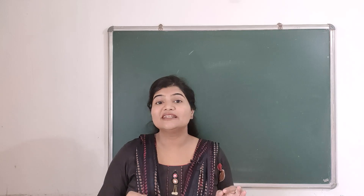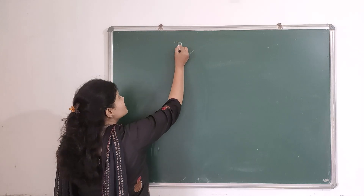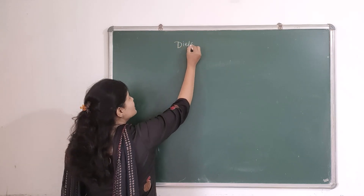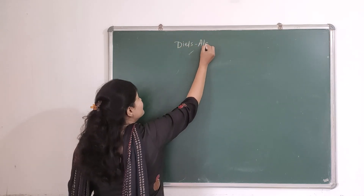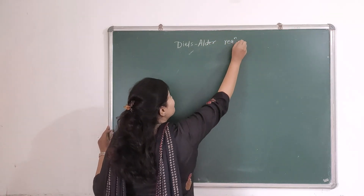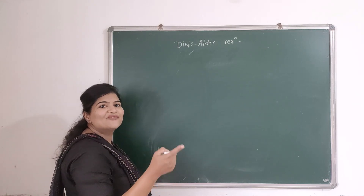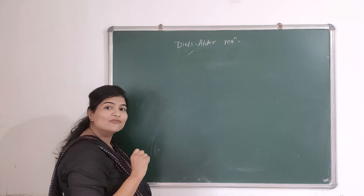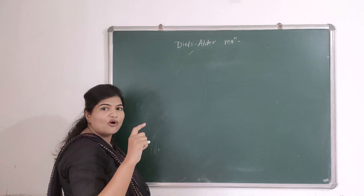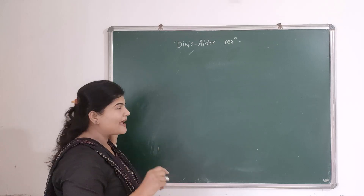Hello everyone and welcome back to B Pharma Wise. In this video we are going to discuss the Diels-Alder reaction. This reaction is given by conjugated dienes with alkenes or alkynes. It is very important from an exam point of view as well as from an industrial point of view, because it is widely used for the formation of cyclic or ring compounds.